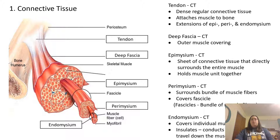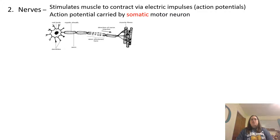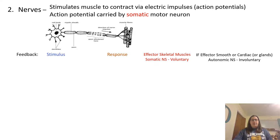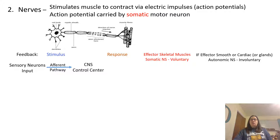Nerves stimulate your muscles to contract through electrical impulses, or action potentials. Action potentials are carried by somatic motor nerves when talking about skeletal muscles. There's a stimulus that comes down through the nerve and causes a contraction response. These effector skeletal muscles are controlled by the somatic nervous system, so this is voluntary movement. If the effector is smooth or cardiac muscle, or if it's talking to glands, this is the autonomic nervous system — involuntary. Sensory neurons send an input along the afferent pathway up toward your spinal cord and brain, leading to the central nervous system, which is your control center. The CNS decides what needs to be done and sends a signal down the motor neurons — that is the output.